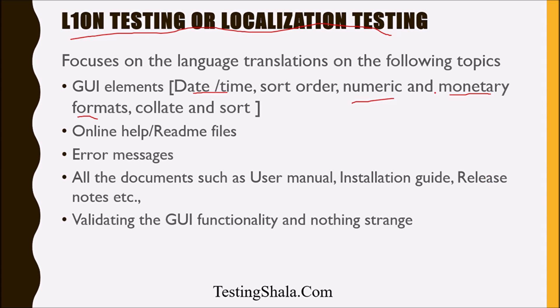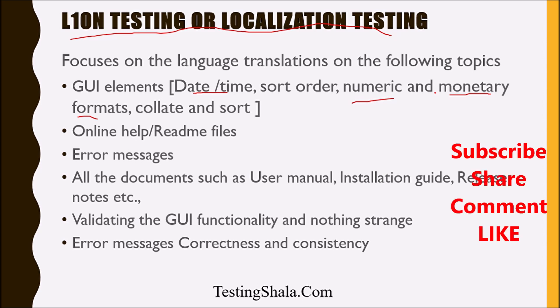Last but not least is validating GUI functionality. We completely test all the GUI flows to ensure that when we do a language transition, we do not break any functional behavior — everything should work as expected regardless of the language changed. The final validation is checking error messages for correctness and consistency. In any language, when you translate error messages, they should have the right meaning and be displayed consistently, irrespective of which language the application is opened in.